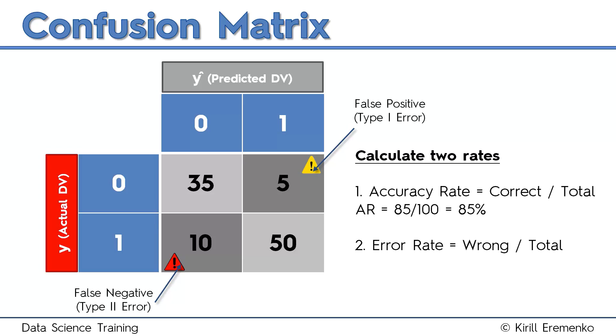But even by looking at the confusion matrix, you can quickly understand what the accuracy rate is, and also the error rate. You take the total that you were wrong about, and you divide by the entire total. In this case, it's 15 divided by 100. It's 15% error rate. That's all for today. We'll be using the confusion matrix in our next tutorial.